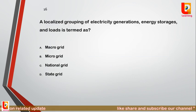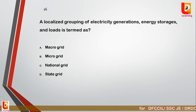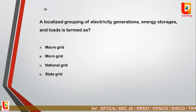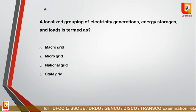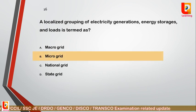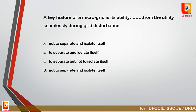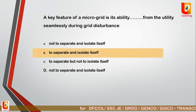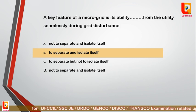Question 8: Localized grouping of electricity generation, energy storage and loads is termed as — option A: macro grids; option B: micro grids; option C: national grid; option D: state grid. Correct answer is option B: micro grid. Question 9: A key feature of the micro grid is its ability to separate and isolate itself from the utility seamlessly during grid disturbance.